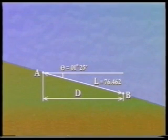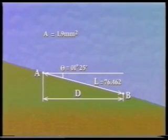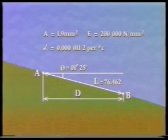During the measurement, the tape was laid along the ground surface. Its temperature was 10 degrees C, and it was pulled at a tension of 70 newtons. The cross-sectional area of the tape is 1.9 square millimeters. The modulus of elasticity of the tape material is 200,000 newtons per square millimeter, and its coefficient of thermal expansion is 0.0000112 per degree C.